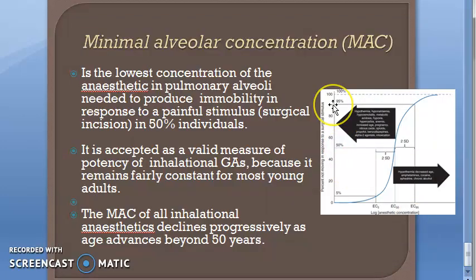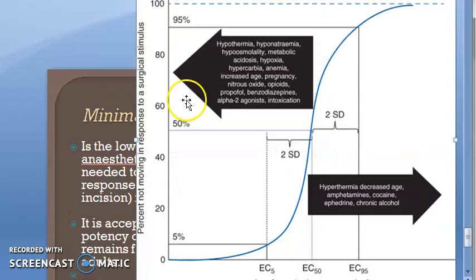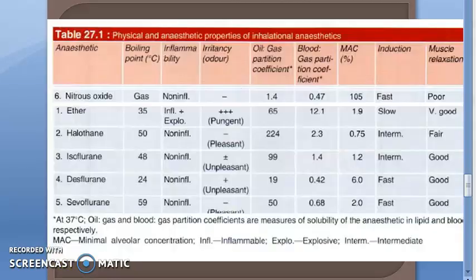The minimum alveolar concentration (MAC) is the lowest concentration of the anesthetic in the alveoli needed to produce immobility in a person in response to a painful stimulus. Note that the MAC for nitrous oxide is 105% — it is very high.